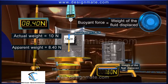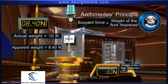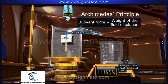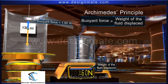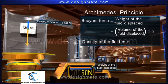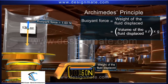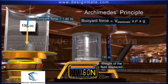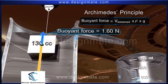This relation was discovered by Archimedes and is called Archimedes' principle. It states that when an object is partially or completely immersed in a fluid, it experiences a buoyant force whose magnitude is equal to the weight of the fluid displaced by the immersed part of the object. The buoyant force equals rho × V × g, which is equal to the volume of the immersed part × rho × g. This clearly shows that buoyant force depends only on the volume of the immersed part and the density of the fluid.